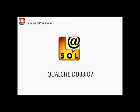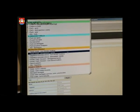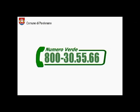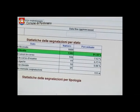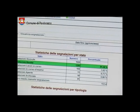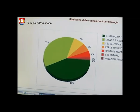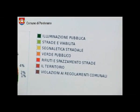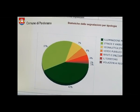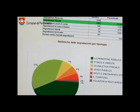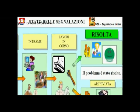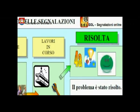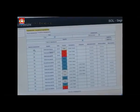Qualche dubbio? Se non hai internet, niente paura. Puoi fare una segnalazione anche chiamando il numero verde. Nel primo anno di funzionamento, Sol ha raccolto oltre 1600 segnalazioni, in media 133 al mese. La maggior parte riguarda l'illuminazione pubblica, viabilità e strade. Escluso il 6% di suggerimenti e richieste non catalogabili come disservizi, il 92% dei problemi segnalati sono stati risolti. Il tempo medio di risoluzione è di 7 giorni.